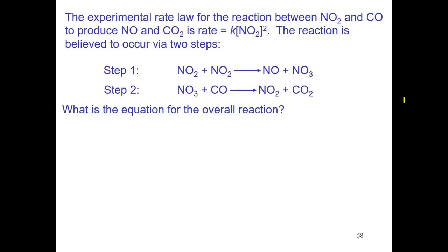Let's do a little practice exercise here. The experimental rate law for the reaction between NO2 and CO, nitrogen dioxide and carbon monoxide, to produce nitrogen monoxide and carbon dioxide is this. Rate equals K times the molarity of NO2 squared. So, the overall reaction is second order with respect to NO2 and zero order with respect to CO. In other words, the reaction rate does not depend on the concentration of carbon monoxide. So, the reaction is believed to occur via two steps. Step one, NO2 plus NO2 collide to give us NO plus NO3. In step number two, NO3 collides with carbon monoxide to give us the product NO2 plus CO2.